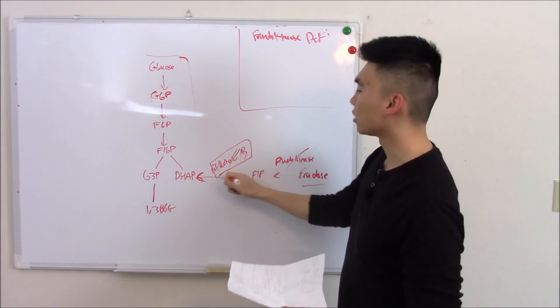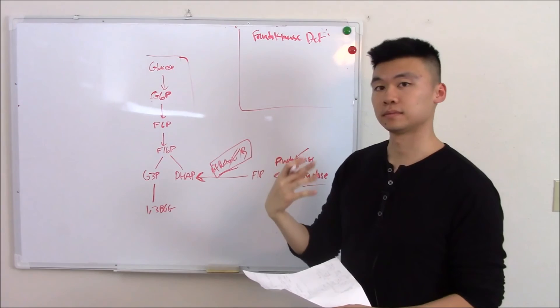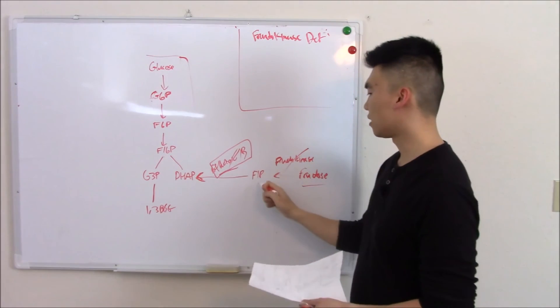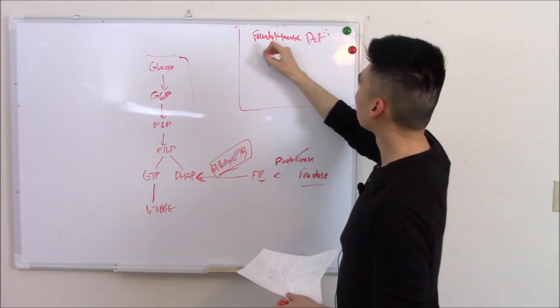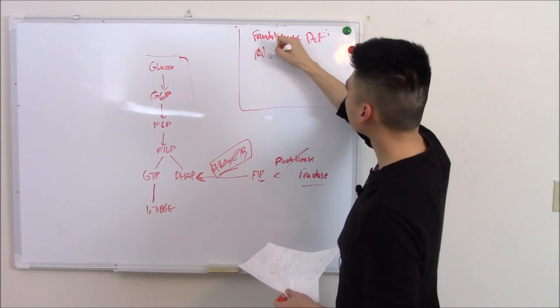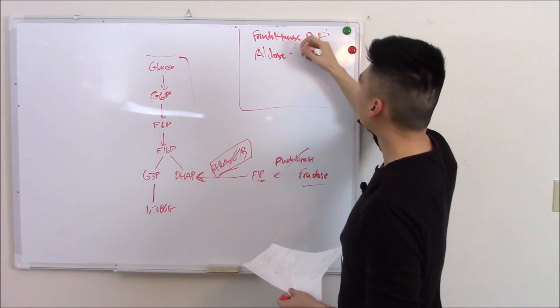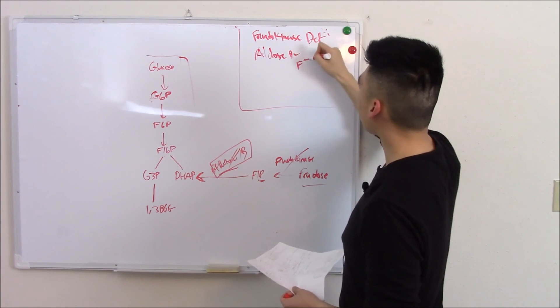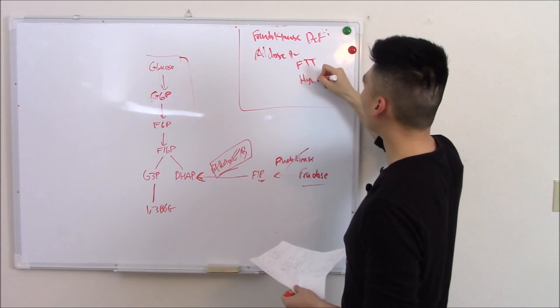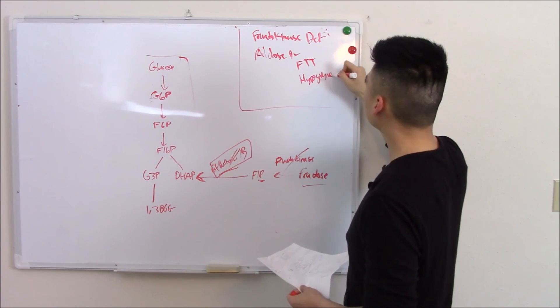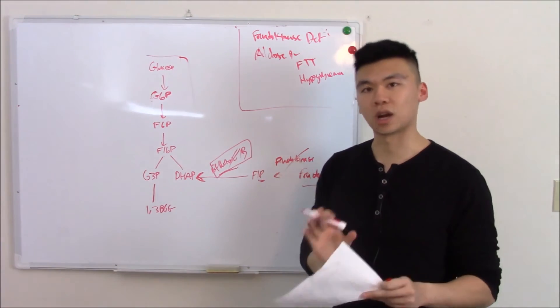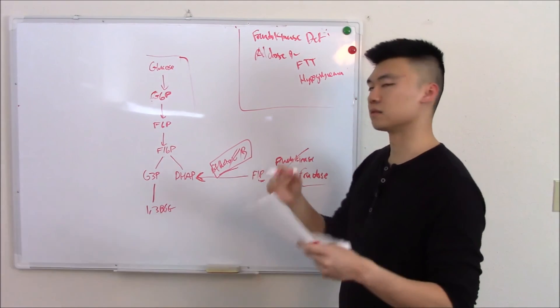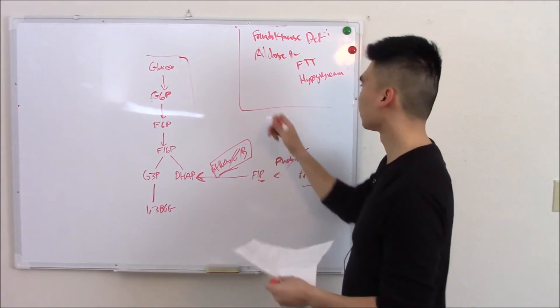Aldolase B, aldolase B deficiency, however, more severe. Why? Phosphate trapping. There's that term again. So aldolase B, you're going to have failure to thrive. Hypoglycemia. And that again is all due to the phosphate trapping. Again, try and limit the fructose, the fruit juices, the honey. One last thing.